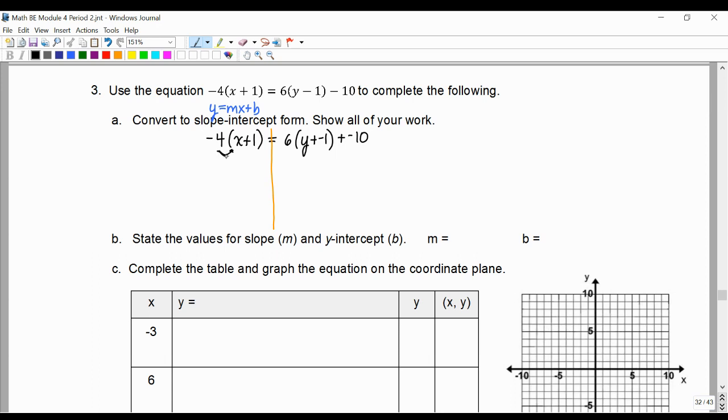Next, I'm going to distribute. Negative 4 times x is negative 4x, and negative 4 times 1 is negative 4. I'm going to repeat that on the other side. 6 times y is 6y. 6 times negative 1 is negative 6 plus negative 10.